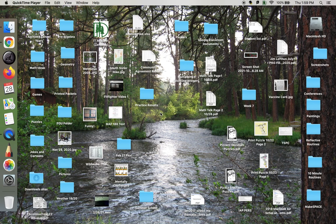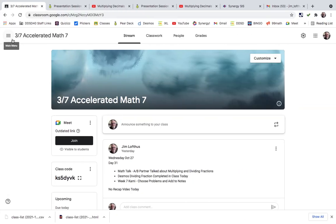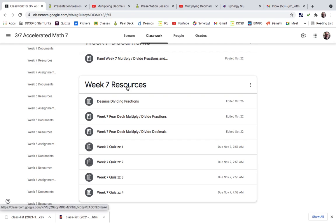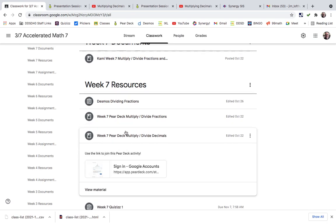This is a recap for Thursday, October 28th. In class today, we went to the resources for week 7. We went to the third resource here, which is week 7, Paradex, Multiply and Divide Decimals.